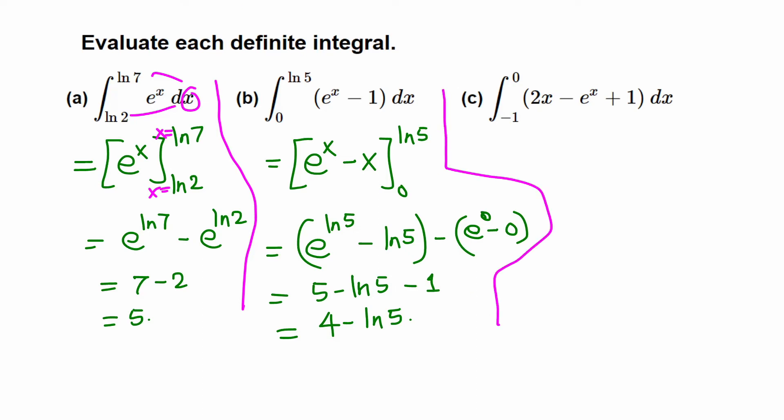Okay, part c has three terms. Anti-derivative of 2x is x squared, because derivative of x squared is 2x. Or you can go: 2 times x means x raised to 1, times 2 over 2 cancel to give x squared, so regardless.